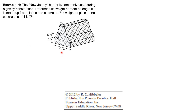We begin by considering this trapezoid here. This is an isosceles trapezoid, so the angles are 55°, and we also have 55° on the other side. I'll call this dimension 'a'. Tangent of 55° equals 12 inches over a. Solving: tangent 55° = 12 inches / a, so a = 8.4025 inches.